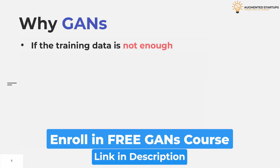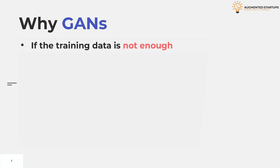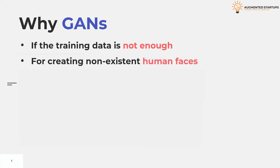If your training data is insufficient, no problem. GANs can learn about your data and generate synthetic images that augment your dataset. GANs can create images that look like photographs of human faces even though the faces don't belong to any real person.